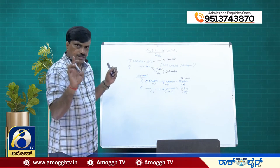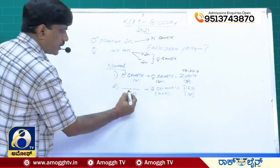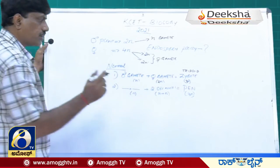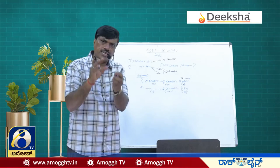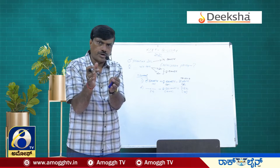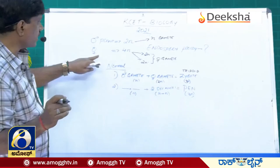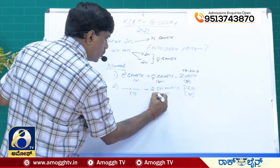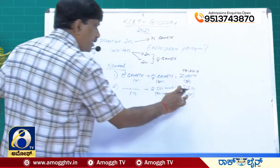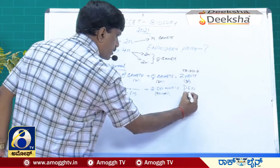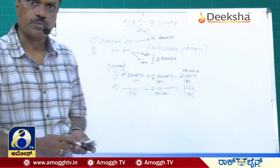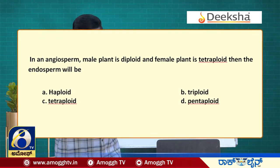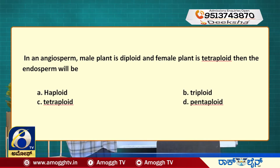But the question is not about the zygote — it's about the endosperm. The male gamete is haploid (n), and the two secondary nuclei in the embryo sac are each 2n, since the mother plant is tetraploid and all cells in the embryo sac will be diploid. So the endosperm ploidy = n + 2n + 2n = 5n. The answer is pentaploid — option D.